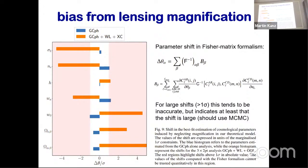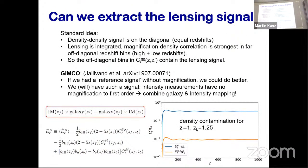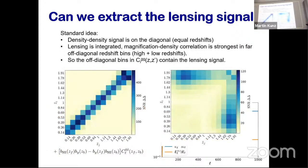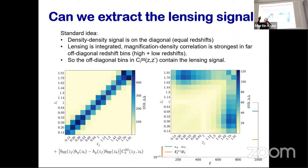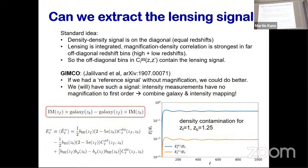Now, can we actually extract the lensing signal? The density–density signal sits on the diagonal while the magnification signal sits far off the diagonal — you see the correlation between background sources being lensed and the foreground density. So the standard approach to isolate magnification is to look only at very off-diagonal redshift bin pairs.